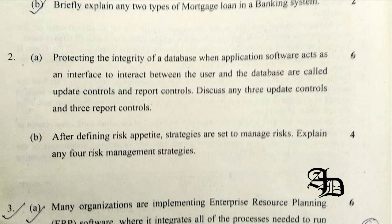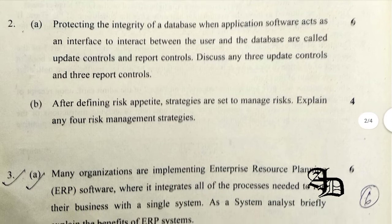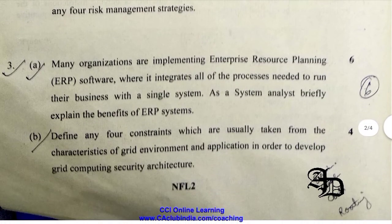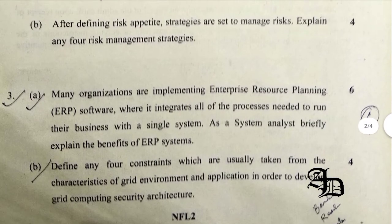Question 2B was related to risk management strategies set after defining risk appetite. Explaining any 4 risk management strategies: tolerate the risk, transfer the risk, terminate the risk, or treat/turn back the risk can be the answer.